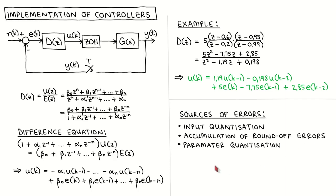The third source of errors is the quantization of the coefficients of the controller equations due to the finite precision with which a number can be represented in a digital processor. This could become significant in complex controllers, causing errors in the locations of the poles and zeros of the controller. In addition to these calculation errors, the time taken to sample the plant output, perform the controller calculations, and apply the controller output to the plant input could be significant compared to the sampling period, causing an unmodeled delay which could produce unexpected behavior.